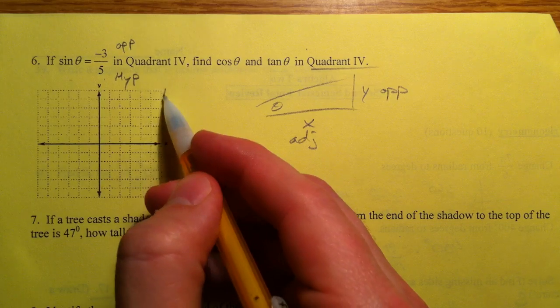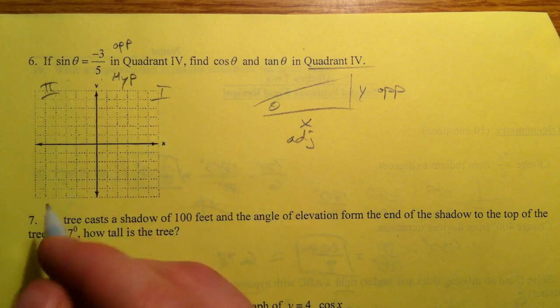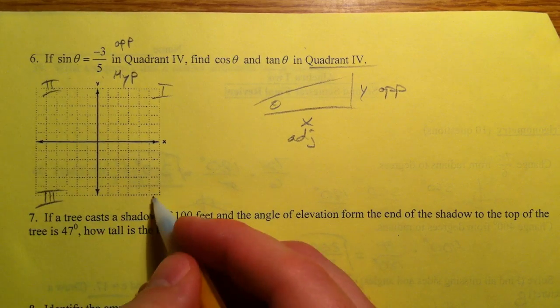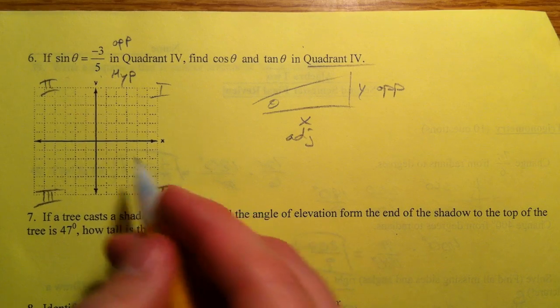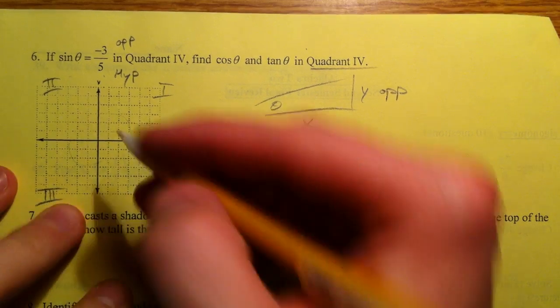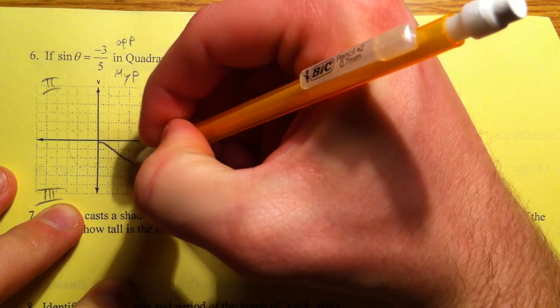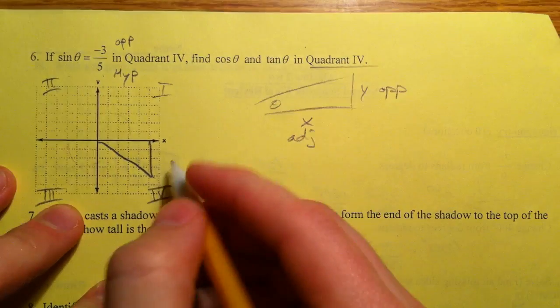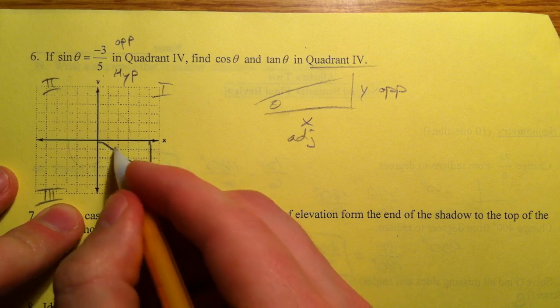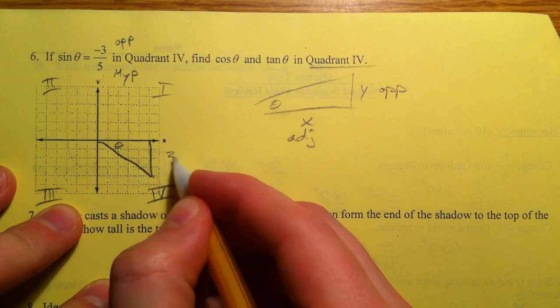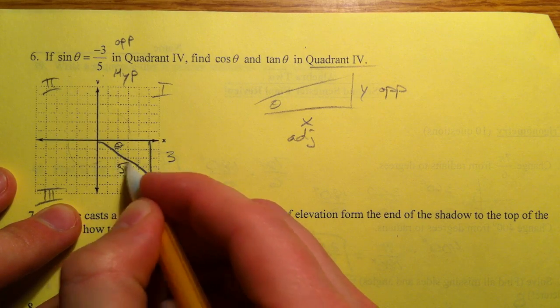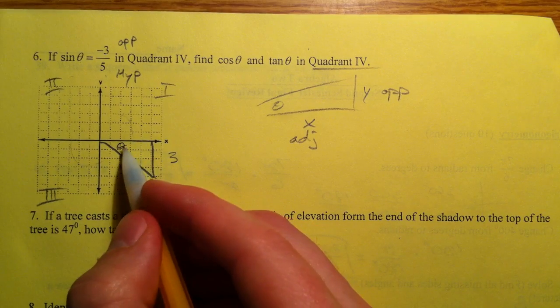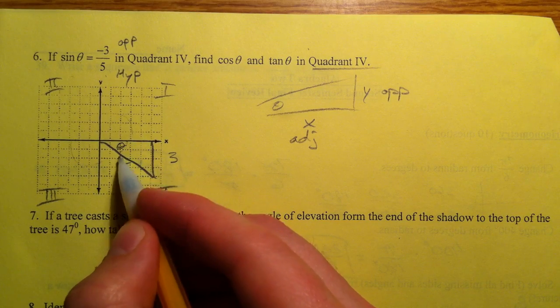And so it's telling us it's in quadrant 4. And so remember how it's 1, 2, 3, 4, just numbered the same way that we measure angles, starting from the x going all the way around. So this has got to be the opposite side, 3, and this has got to be the hypotenuse, 5. Remember, we always make our angle with the x-axis.